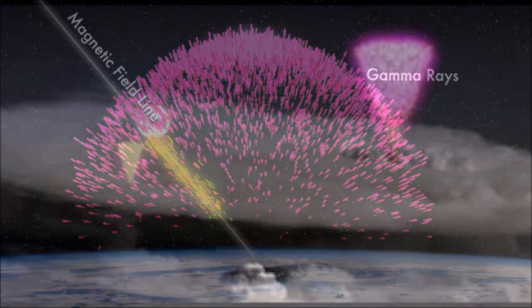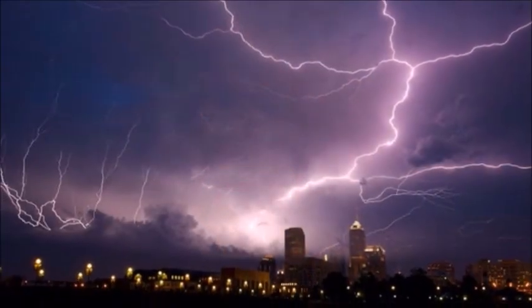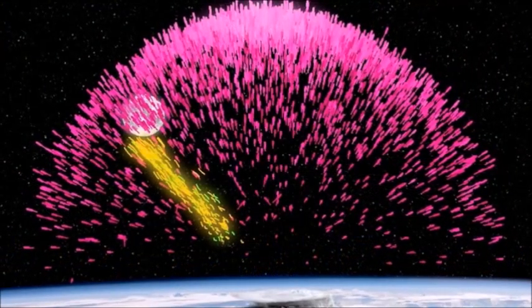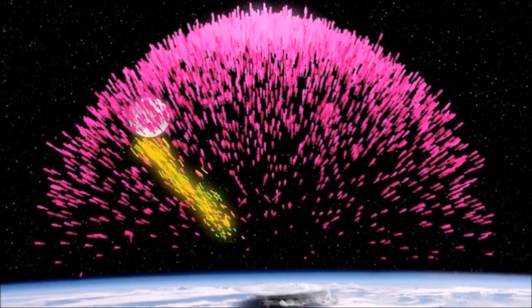Terrestrial gamma ray bursts are produced by storms of all shapes and sizes, explains Joseph Dwyer, professor of physics in the United States, but we still do not know why some thunderstorms produce gamma ray bursts and others do not. While lightning is generated, a gamma ray burst is released at an altitude.